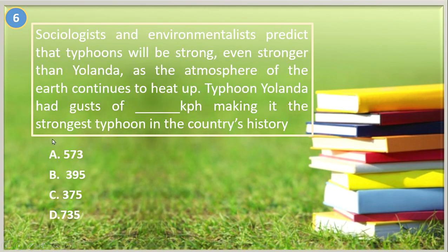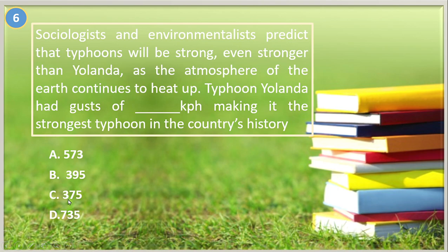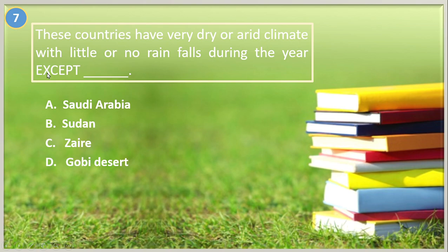Number six. Sociologists and environmentalists predict that typhoons will be even stronger than Yolanda as the atmosphere of the Earth continues to heat up. Typhoon Yolanda had gusts of blank KPH, making it the strongest typhoon in the country's history: A. 573, B. 395, C. 375, D. 735. The answer is 375 KPH.